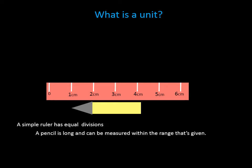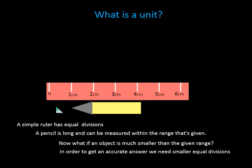This pencil can be measured because it falls within the given range. Now what if we want to measure an object that is much smaller than the given range? Let's use the example of a broken glass. Now the width of the glass appears to be somewhere between 0 to 1 cm. But we don't have an accurate measurement for it, do we? We need smaller divisions to get an accurate measurement for the glass piece.